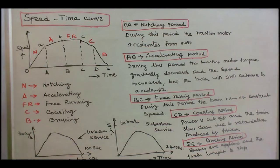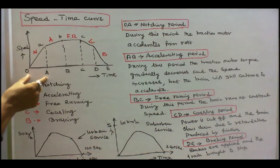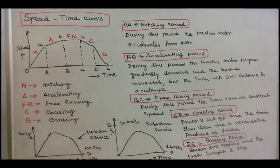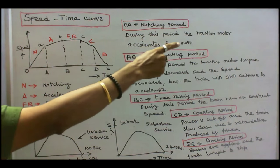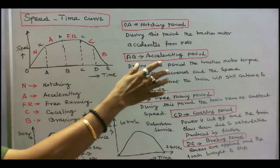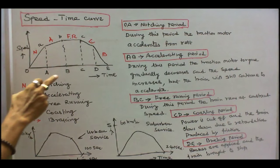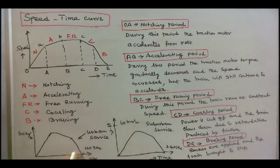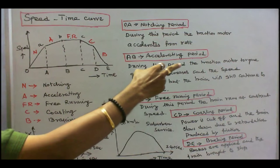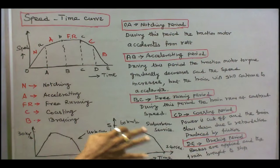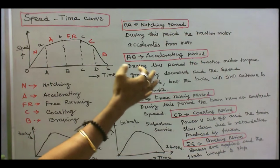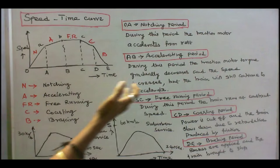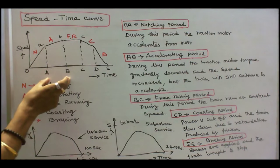This is 240 seconds. The train O-A is the notching period. During this period, the traction motor accelerates from rest. A-B is the accelerating period. During this period, the traction motor torque gradually decreases and the speed increases, but the train will still continue to accelerate.